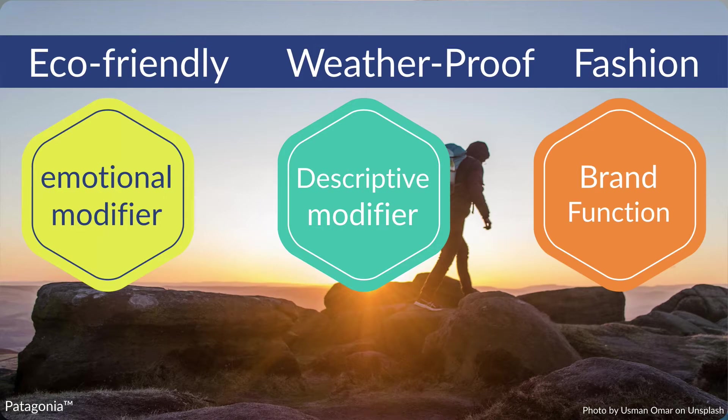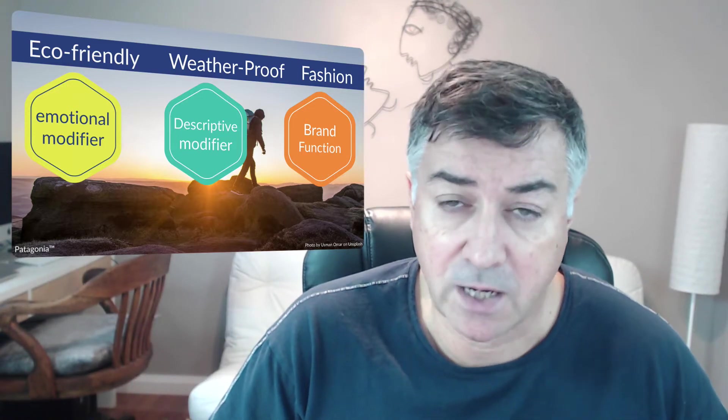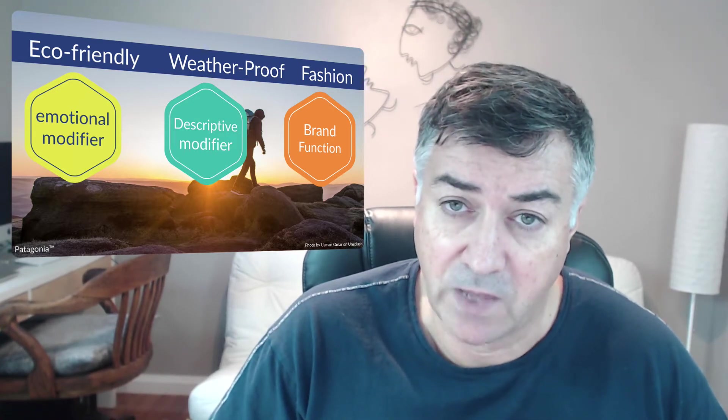'Weatherproof' is the descriptive modifier. It's not about performance — it's about the outfit itself. You can buy a Patagonia jacket and it is adapted to resist any change in the weather: cold, rain, humidity, or heat. So they are perfectly adapted to that.